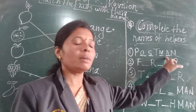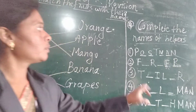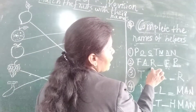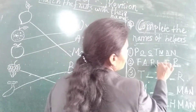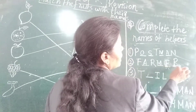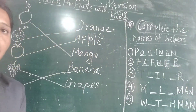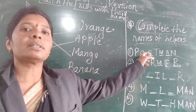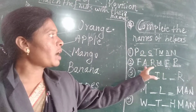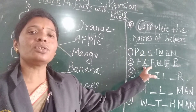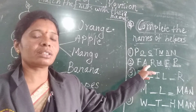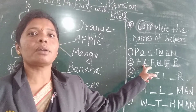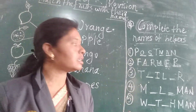Postman — the one who delivers letters, that is the postman. Farmer — farmer means who? The one who does farming. F-A-R-M-E-R farmer. Like this you have to learn and rewrite the spelling.